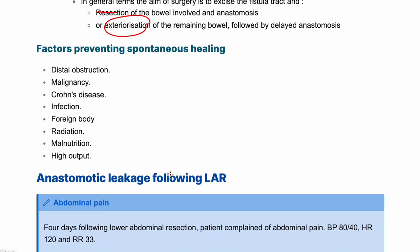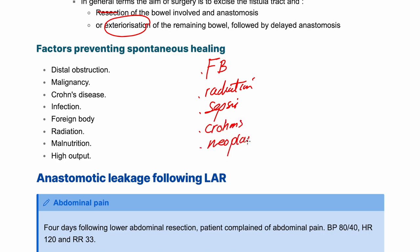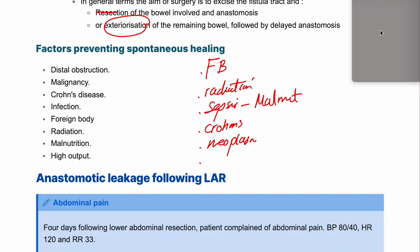Factors preventing spontaneous healing mirror the original risk factors: presence of foreign body, radiation exposure, inadequately treated sepsis, Crohn's disease, neoplasm, and malnutrition. Addressing these is key to allowing spontaneous closure. This covers the management of enterocutaneous fistula.